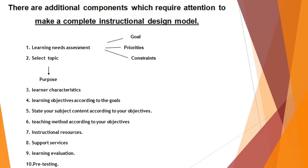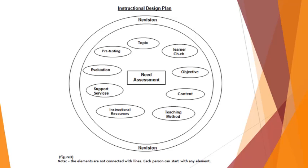At the end, when you are done with all the things, how are you doing pre-testing? Pre-testing is of two types — at the start when you are making a design model, you test it first, and at the end it is done differently. I have told you about formative and summative assessment or evaluation. You can start with any of these 10 elements — whether content, learner characteristics, or objectives and teaching methods — it is up to the designer which element to begin with.